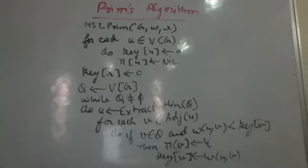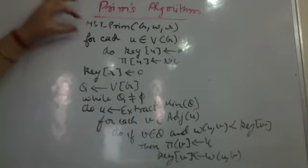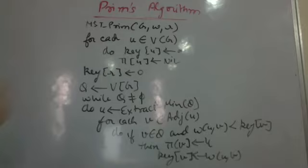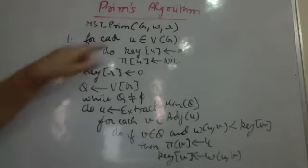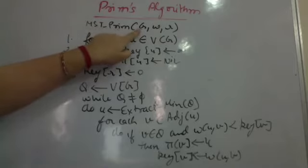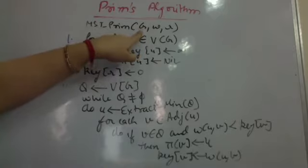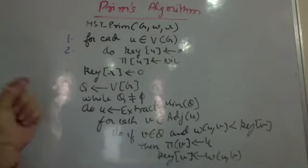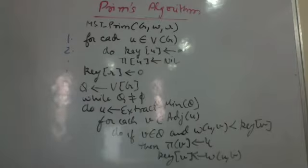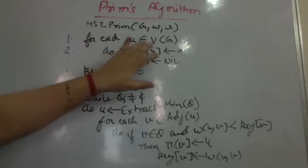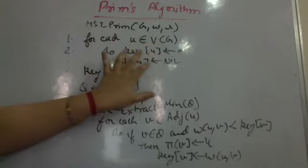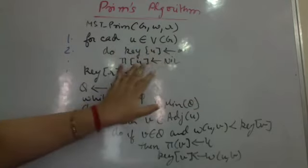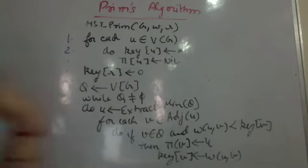In Prim's algorithm, we call the algorithm for a graph G with set of edges E, vertices V, weights on every edge, and R as the root node from which we begin. Since it's Prim's algorithm, we can begin with any node in alphabetical order if no node is specified. For each node in V, initially the key value is infinite, parent is nil, and the root node has key value zero.